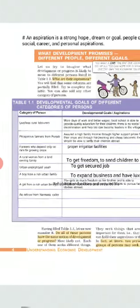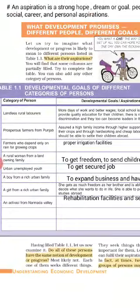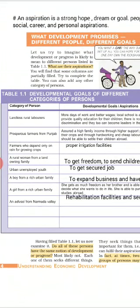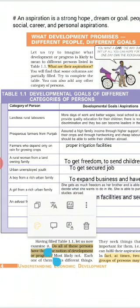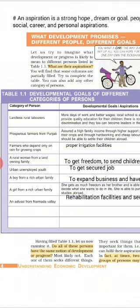All individuals have different goals. Look at this table — here different categories of persons are given with different developmental goals. The first category is a landless rural laborer — people who work on other people's land. Their developmental goal can be to get proper days of work and better wages. Next is a prosperous farmer from Punjab. Their developmental goal can be to sell crops at high prices and to send their children abroad for higher education.